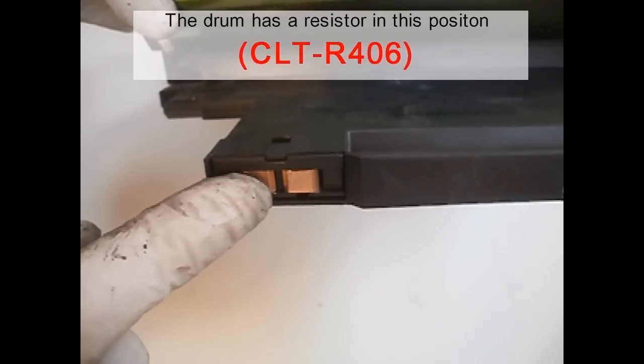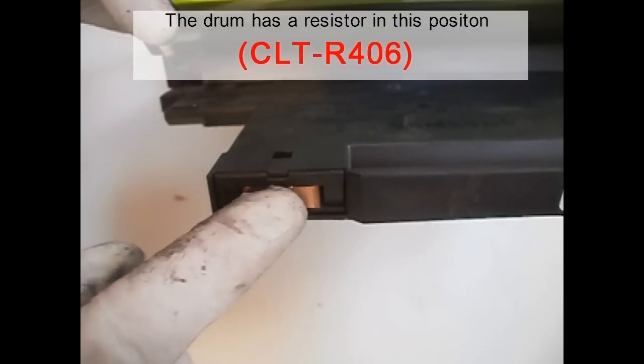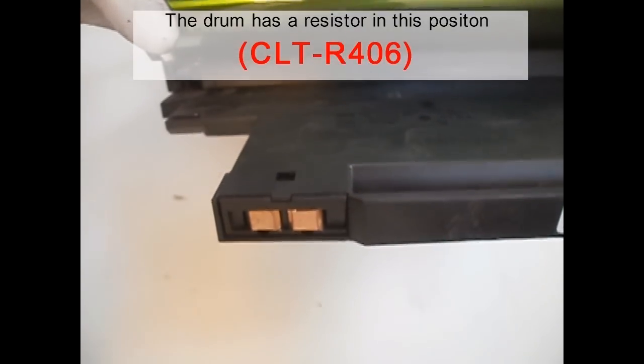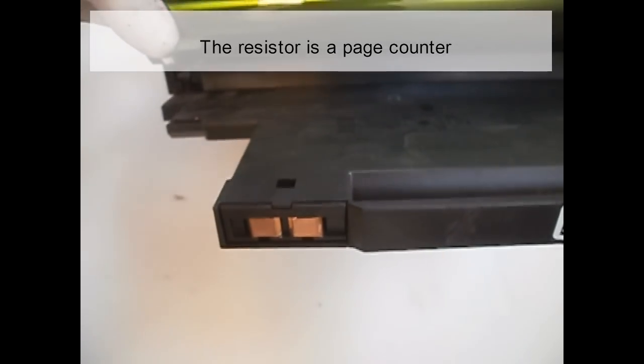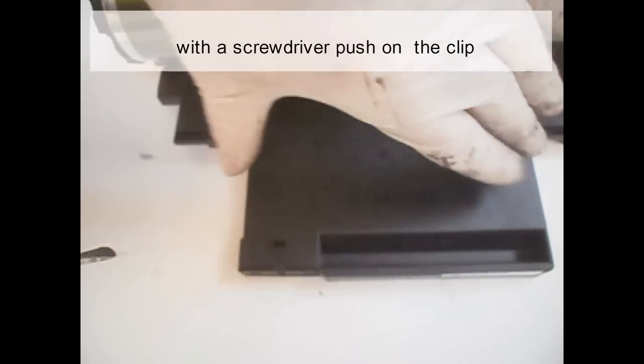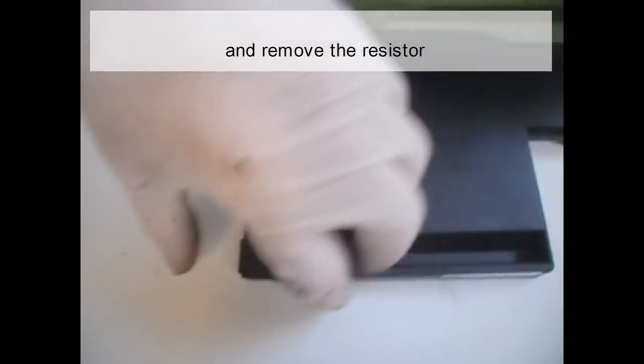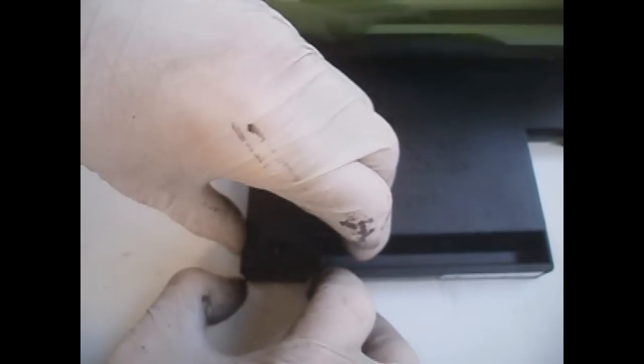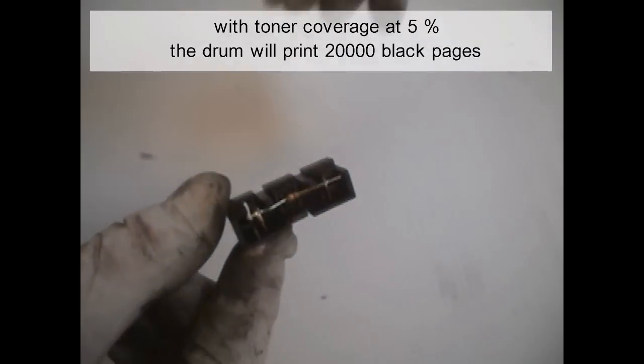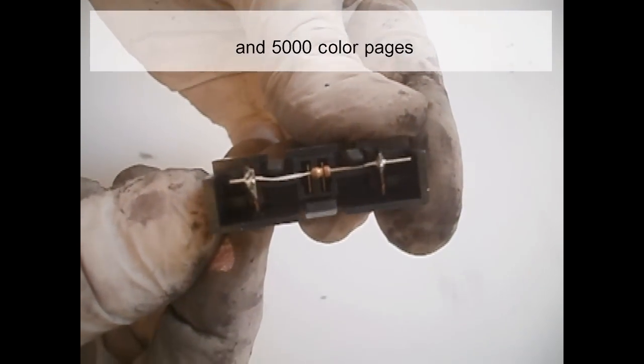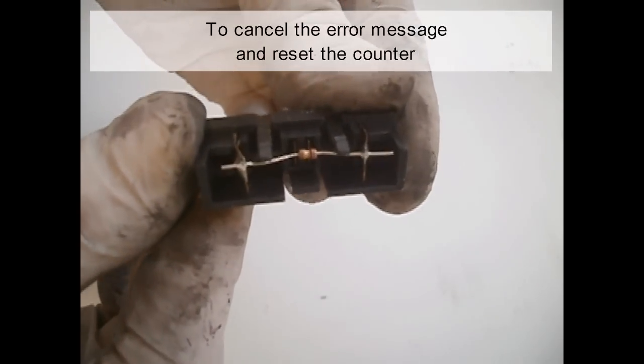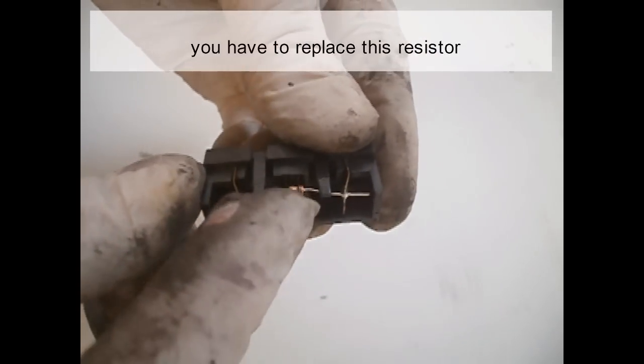The drum has a resistor in this position. The resistor is a page counter. With a screwdriver, push on the clip and remove the resistor. With toner coverage at 5%, the drum will print 20,000 black pages and 5,000 color pages. To cancel the error message and reset the counter, you have to replace this resistor.